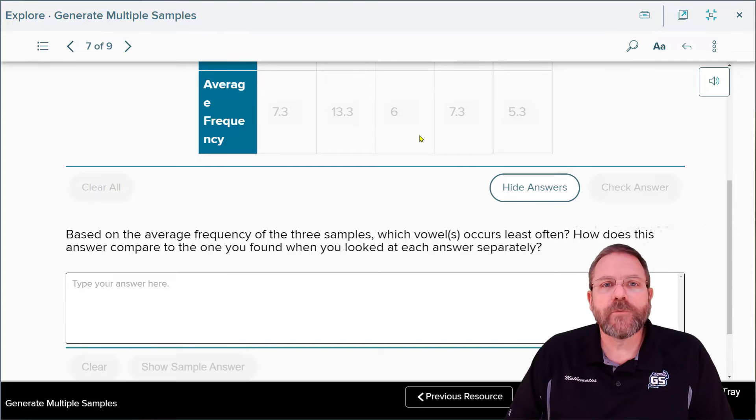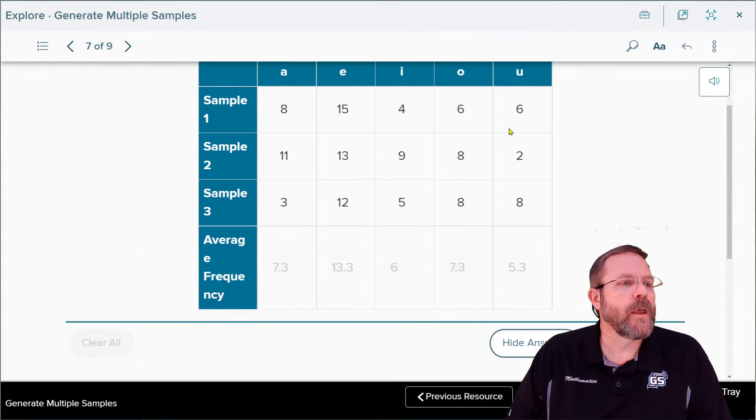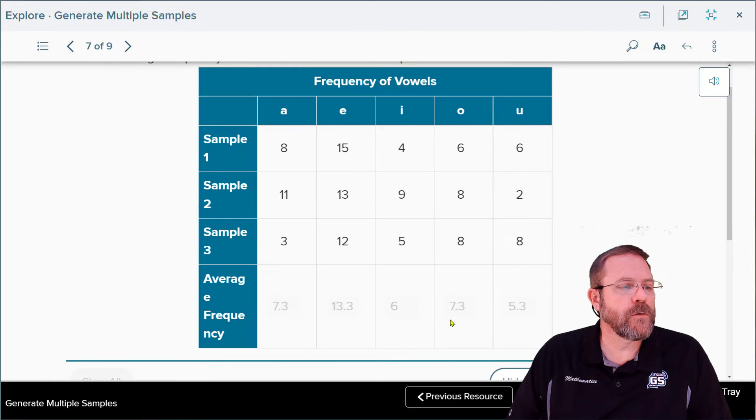So based off of those averages, which vowel does occur the most often? It's going to be E just like I said. Which one was the least used? That's going to be U at 5.3. Surprisingly, O occurred more than I, and O occurred just as often as A did. I would have figured A would have been second place without any competition there.